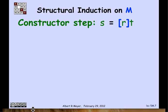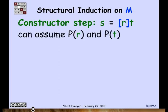If R and T are in M, then so is S, which you get by putting brackets around R and following it by T. Here's the argument. We're allowed to assume when we're trying to prove that S has an equal number of left and right brackets, that R does and so does T.